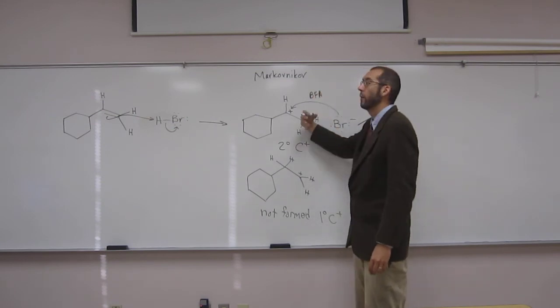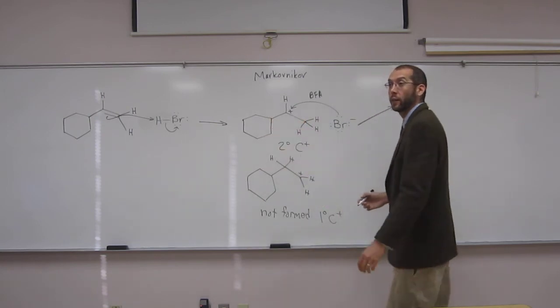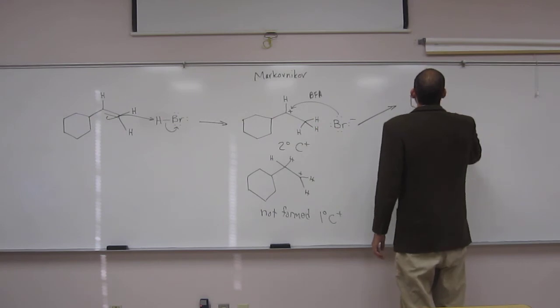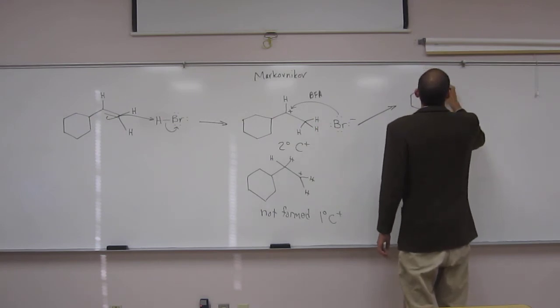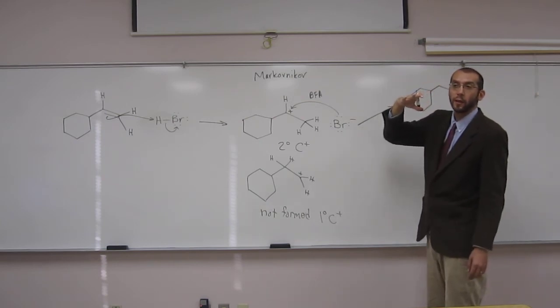Remember that? So it's a 50-50 percentage of the two stereoisomers, the two enantiomers. So let's just show that. So what we're showing here is the back face attack. And what that means is the bromine is coming from the backside of the board to attack that center. So we'll show that.